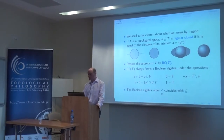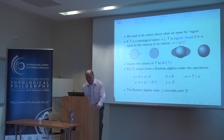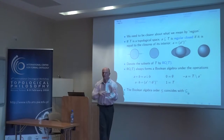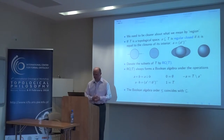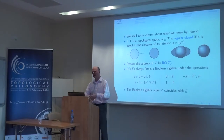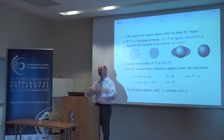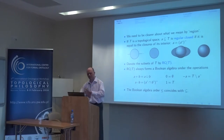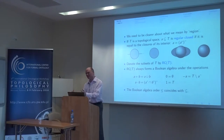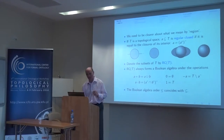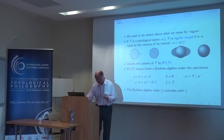The upshot is that if you take the regular closed sets, these are nice regions to deal with. They form a Boolean algebra — you can glom regions together, take intersections, take complements, and everything's fine. If you've seen it before, it's obvious. And if you haven't seen it before, that's all you need to know for the purposes of this talk.